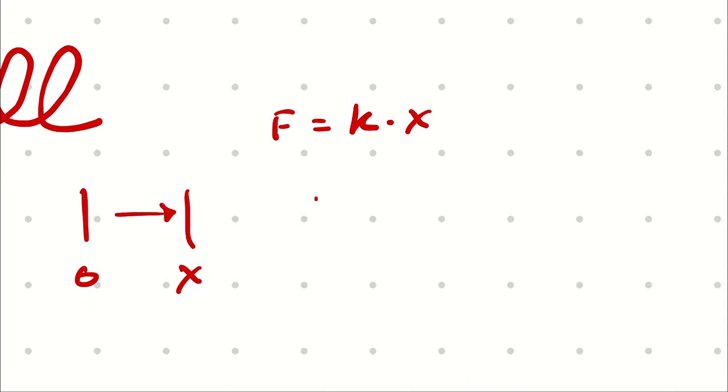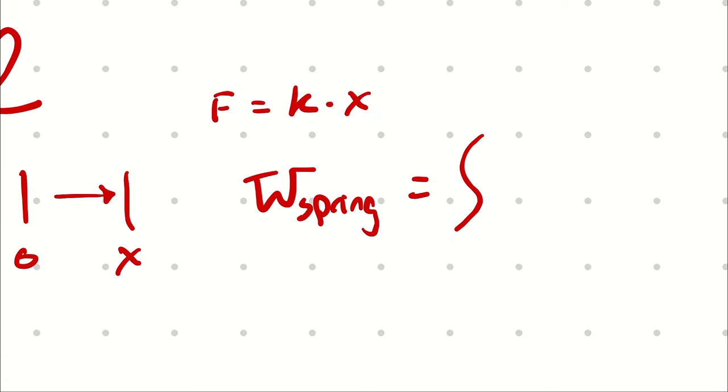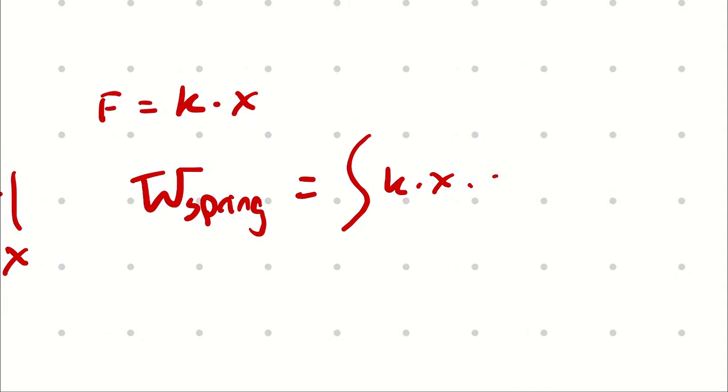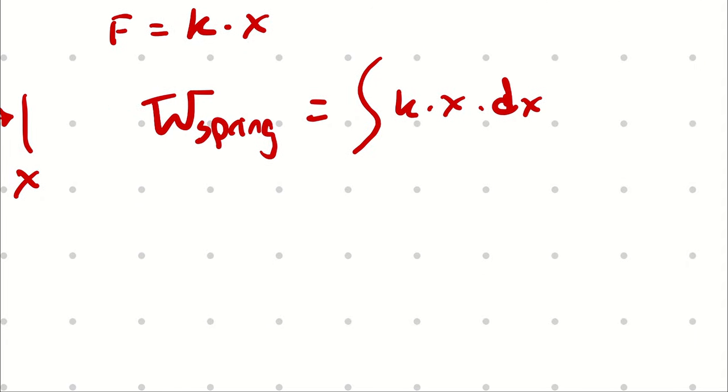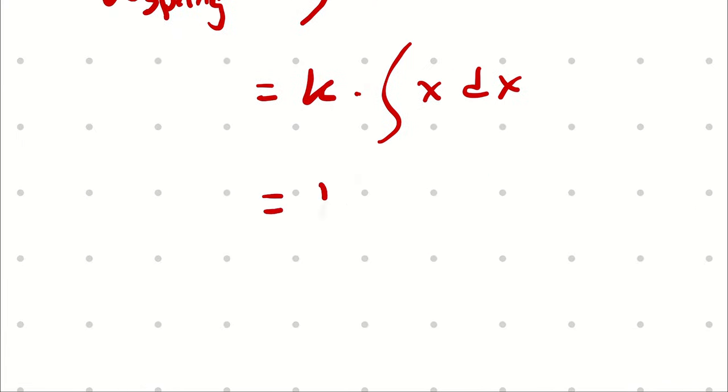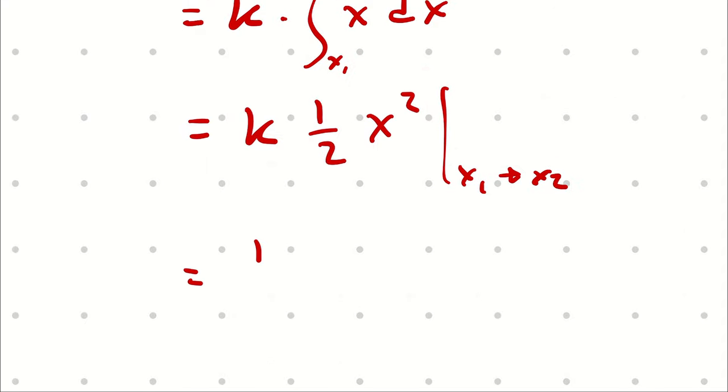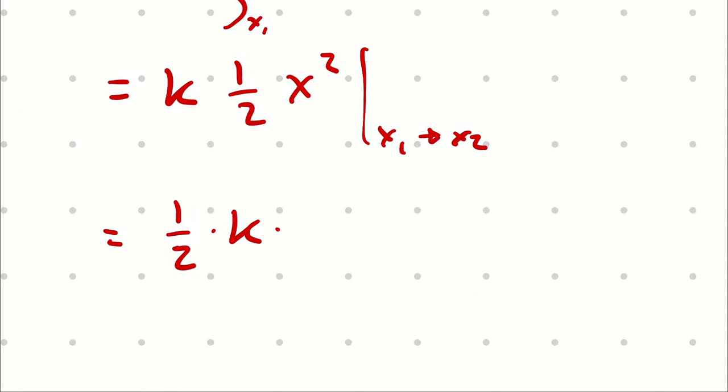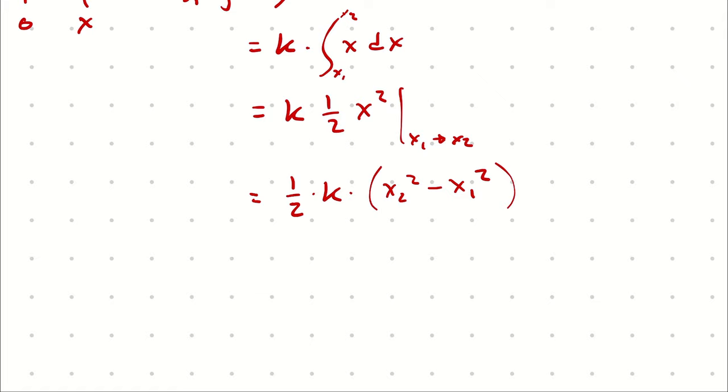And then our spring work is going to be the integral of that force, k times x, with respect to displacement. k comes out, I'm left with the integral of x dx, which is going to be 1 half x squared, evaluated from x1 to x2. So I can write this as 1 half times the spring coefficient, multiplied by x2 squared minus x1 squared. And note that these two x values are relative to the initial, the resting position of the spring.